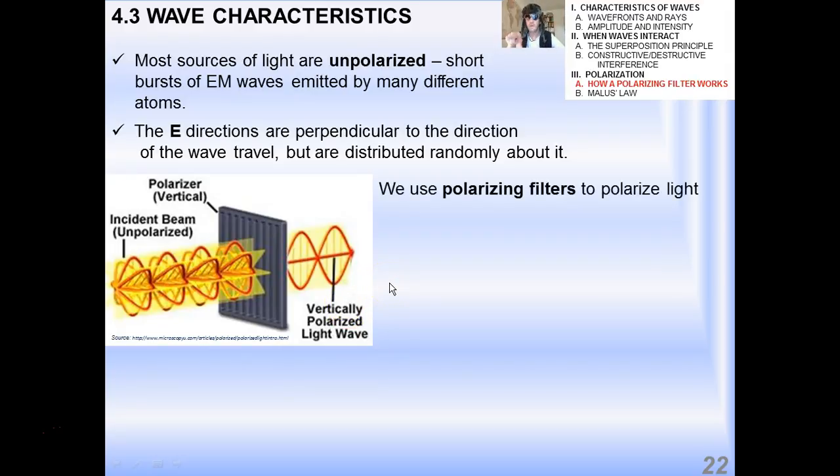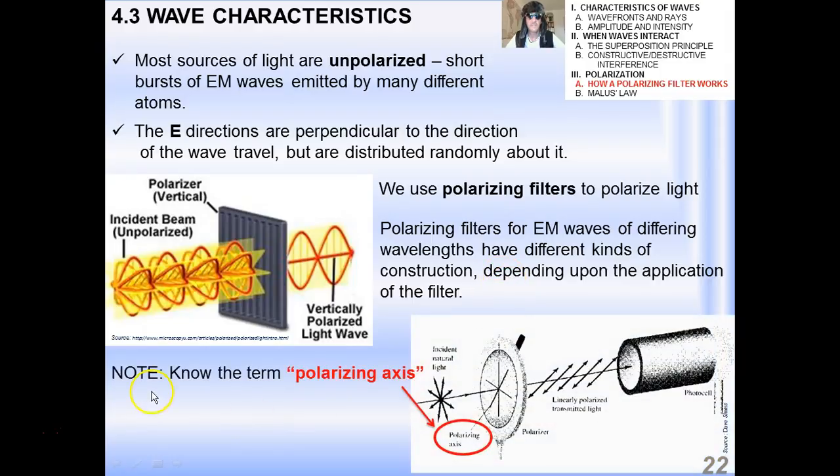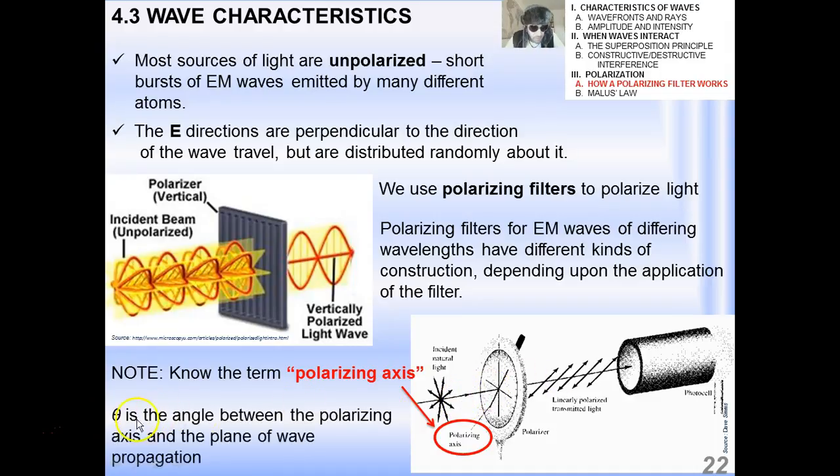We use what are called polarizing filters to polarize light. Polarizing filters for electromagnetic waves of differing wavelengths have different kinds of construction depending on the application of the filter. You need to know in the IB, you need to understand the term polarizing axis. The polarizing axis is this axis right here. Theta is the angle between the polarizing axis and the plane of wave propagation. The polarizing axis would be the axis that is parallel to the slit.